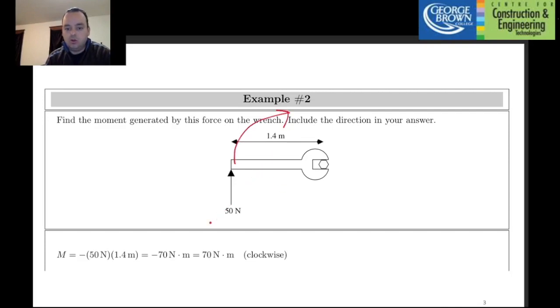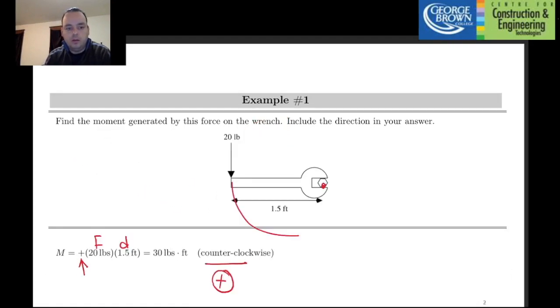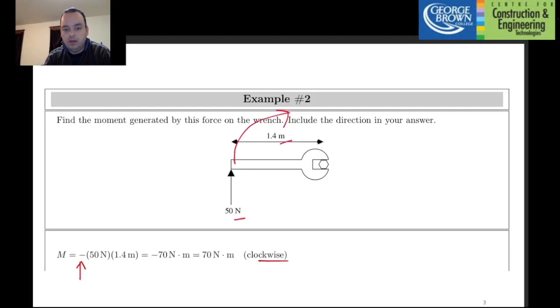In the next example, you'll see that the actual wrench will be rotating clockwise. And since it's going to go clockwise, you'll notice here that the answer is clockwise, but also there's a minus sign in this formula. In this case, I'm using a metric unit, so we have newtons and meters.